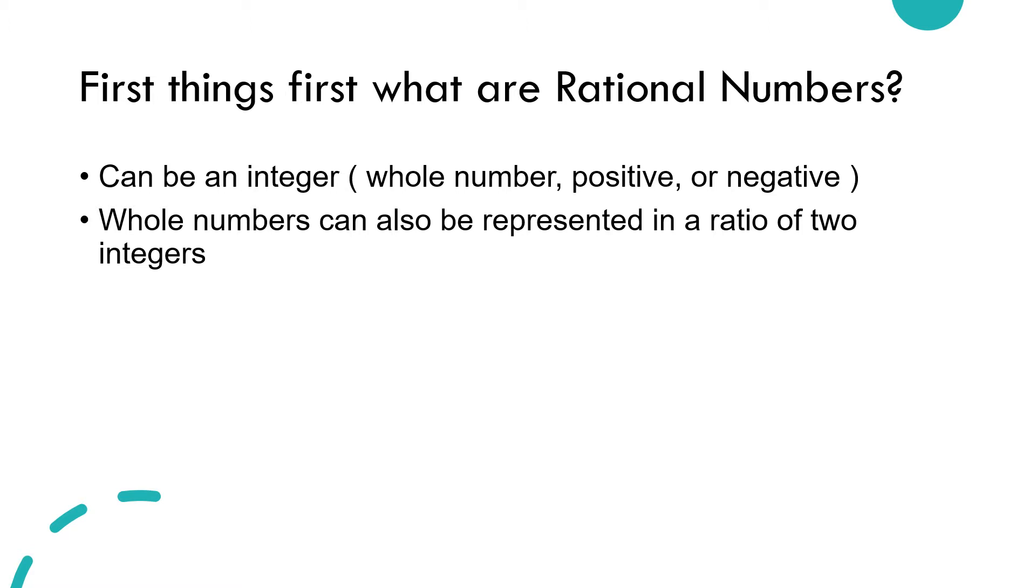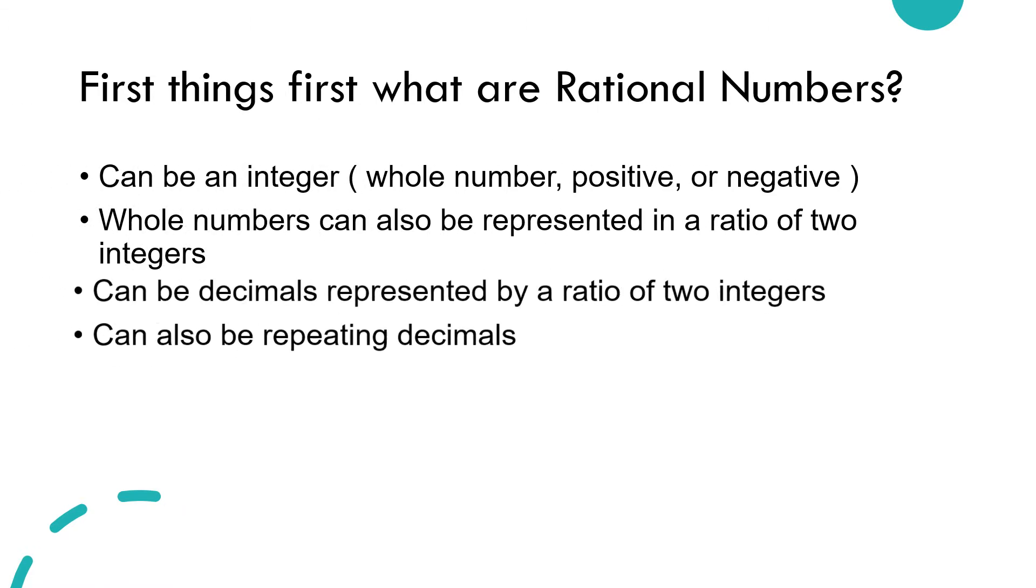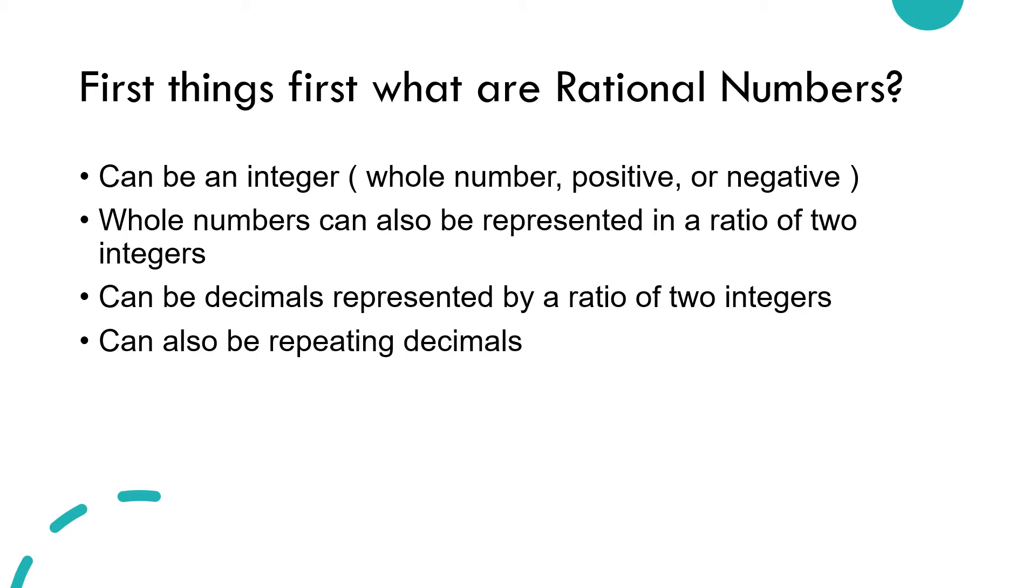Rational numbers can also be decimals as long as that number can be represented by the ratio of two integers. Like 2.25 can be represented as 225 over 100, 2 and 1 fourths, 9 over 4.